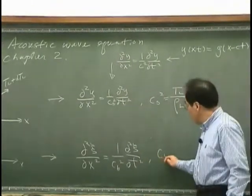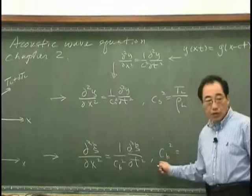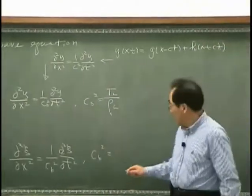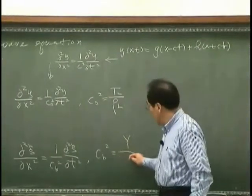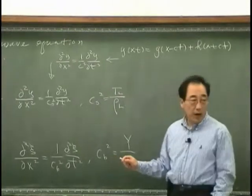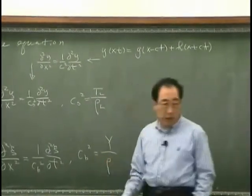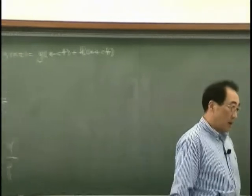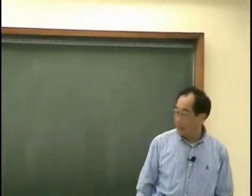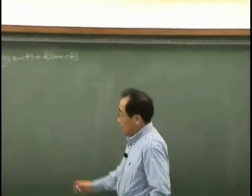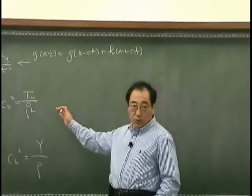where Cb square - B stands for bar - is the ratio between Y, Young's modulus, and rho, the density of the bar. So that's what we found.